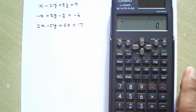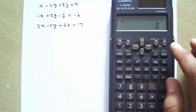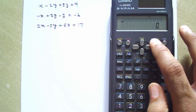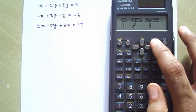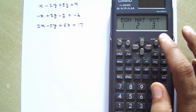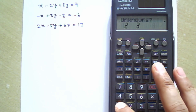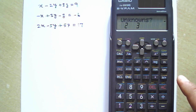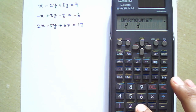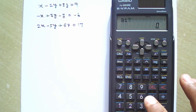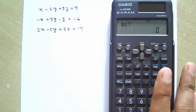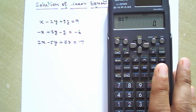Press the Mode button 3 times: 1, 2, 3. Then press 1. Now choose 3 unknowns — press 3. The calculator will now ask for values. You have 3 equations to enter.